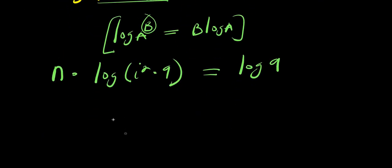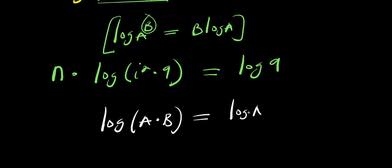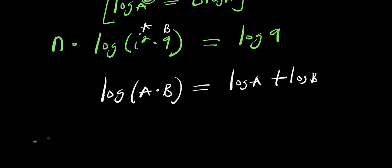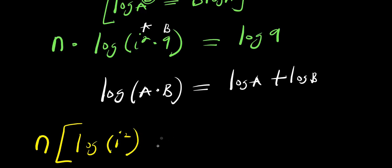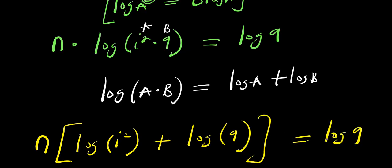Now we also have this other identity: if you have log(a times b), this equals log a plus log b. So this represents our a and this represents our b. So I can write n times the square bracket: log of i squared plus log of 9, and this equals log 9.